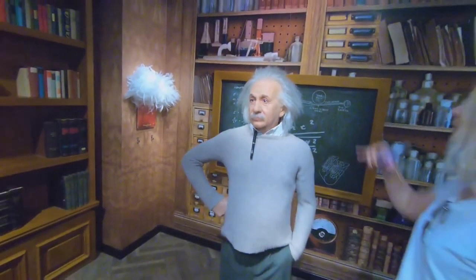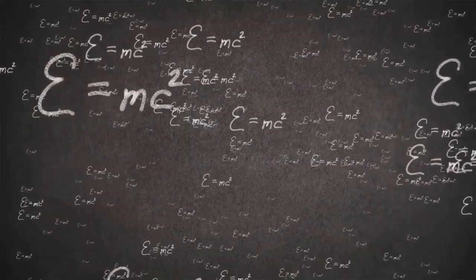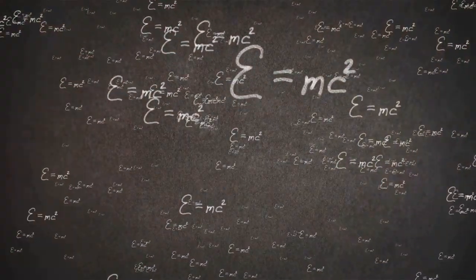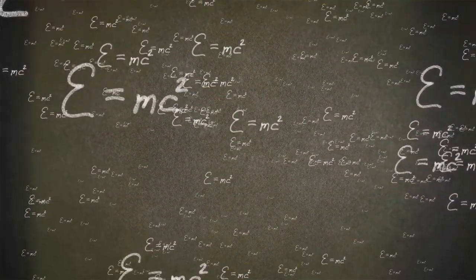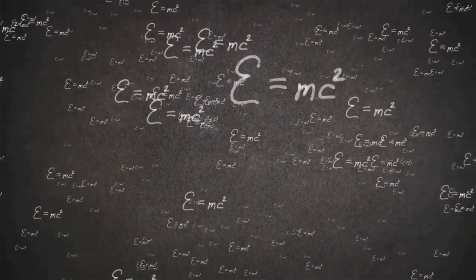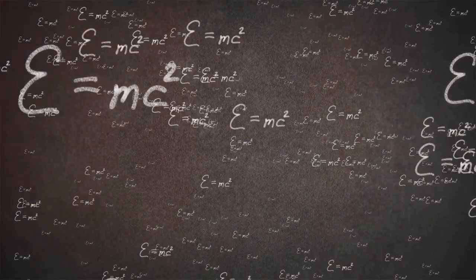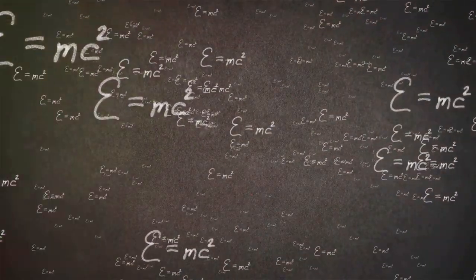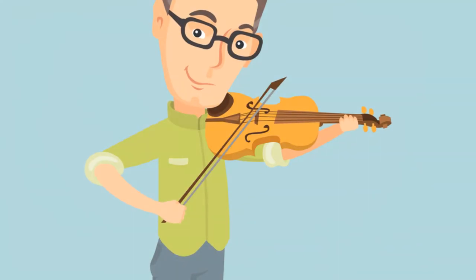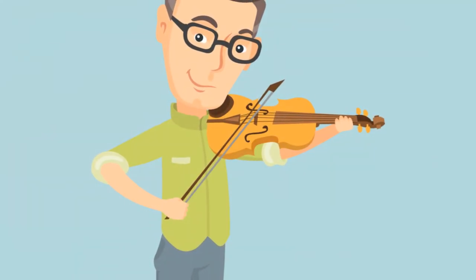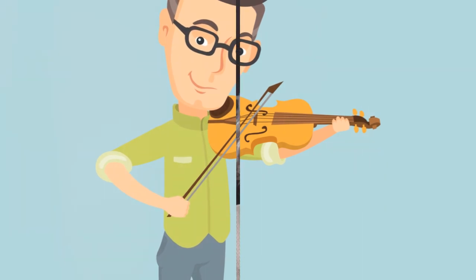Did you know that the brilliant scientist Albert Einstein, who gave us the famous equation E equals MC squared, loved to play the violin? Yes, indeed. He once said, 'I often think in music, I live my daydreams in music.' Now, isn't that something?